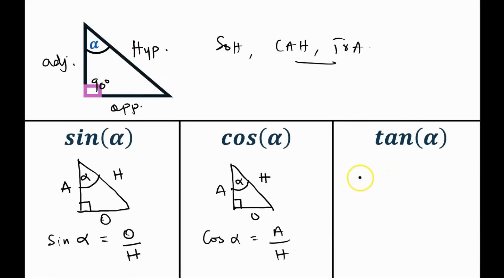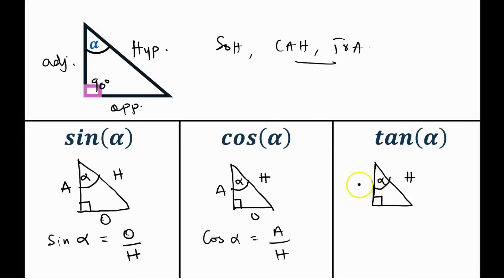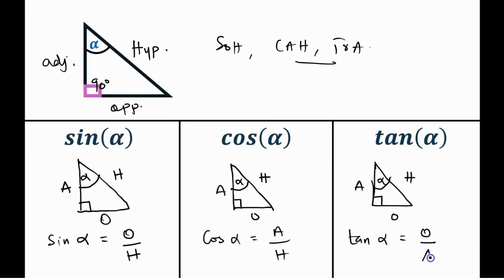Finally, for tangent: with angle alpha and the right angle here, the hypotenuse, adjacent, and opposite sides are identified. Tangent of alpha equals the opposite side divided by the adjacent.